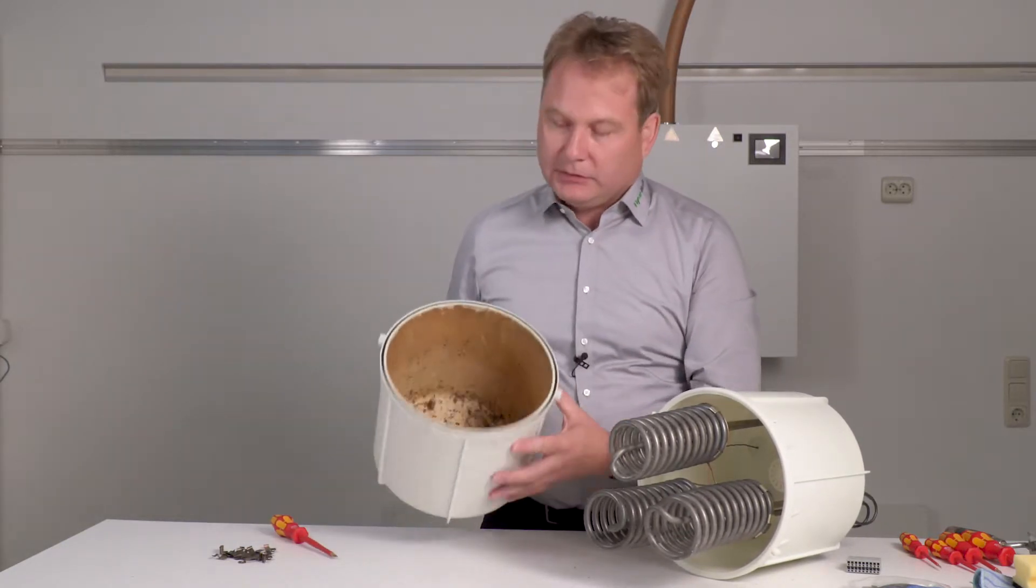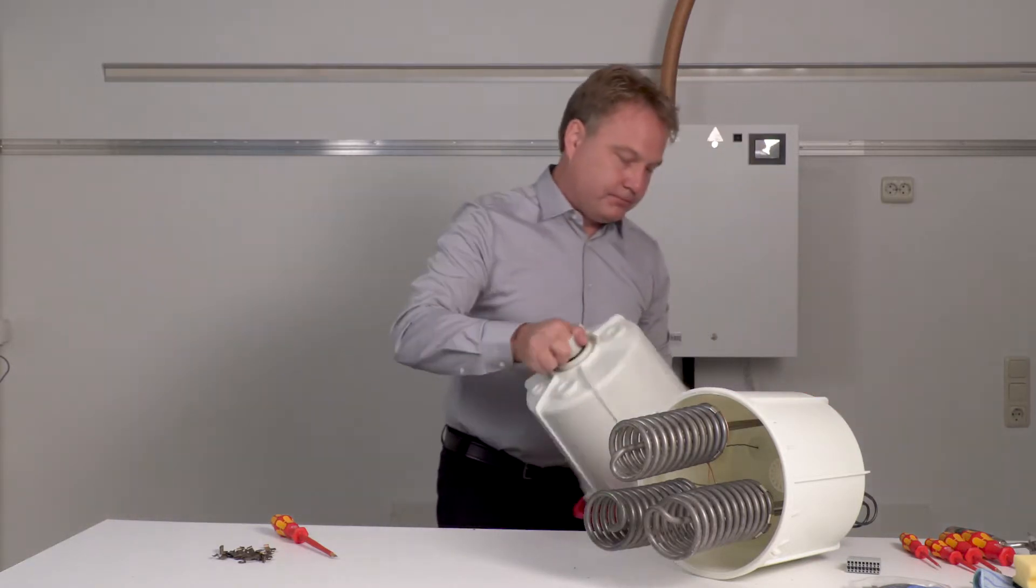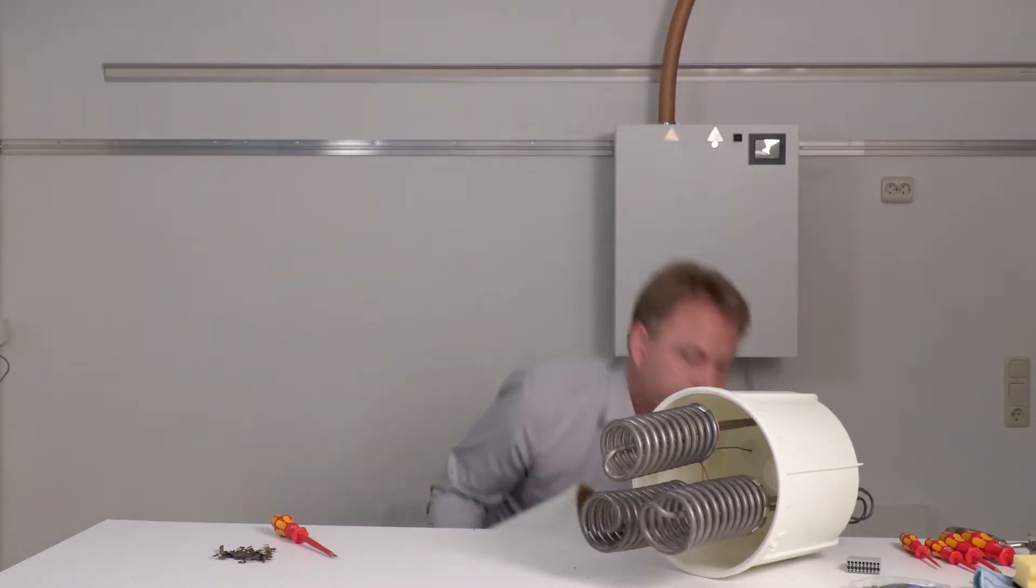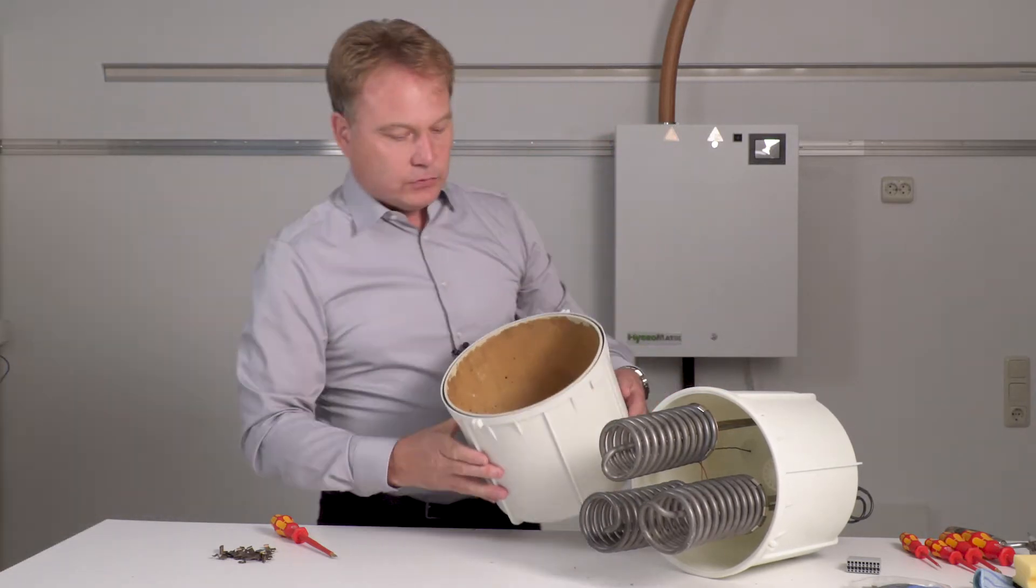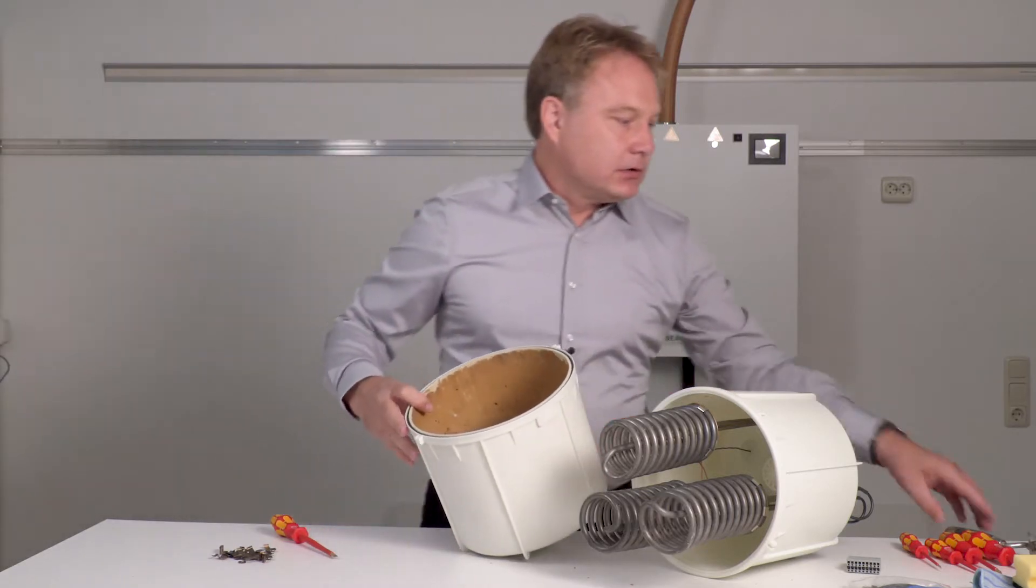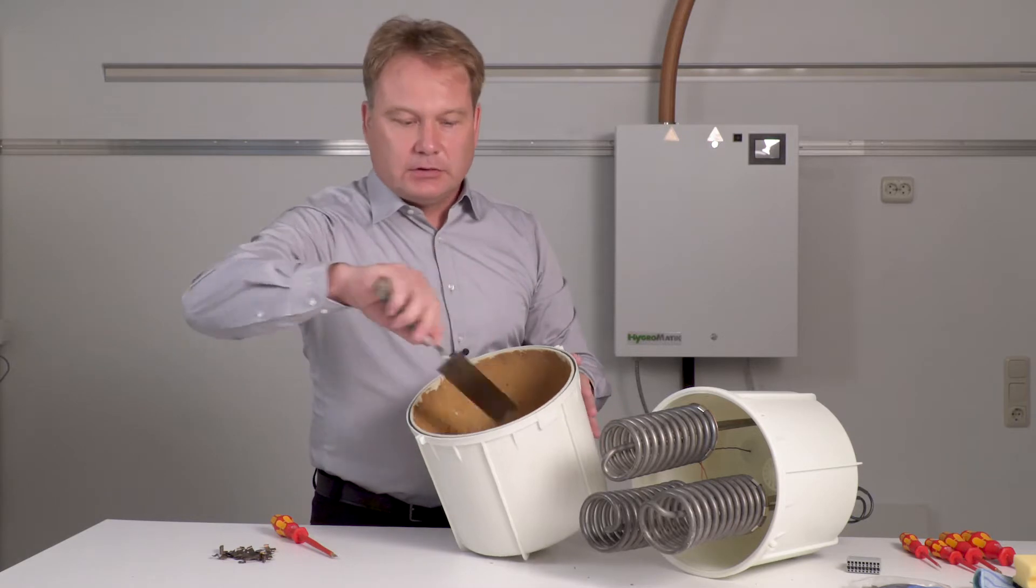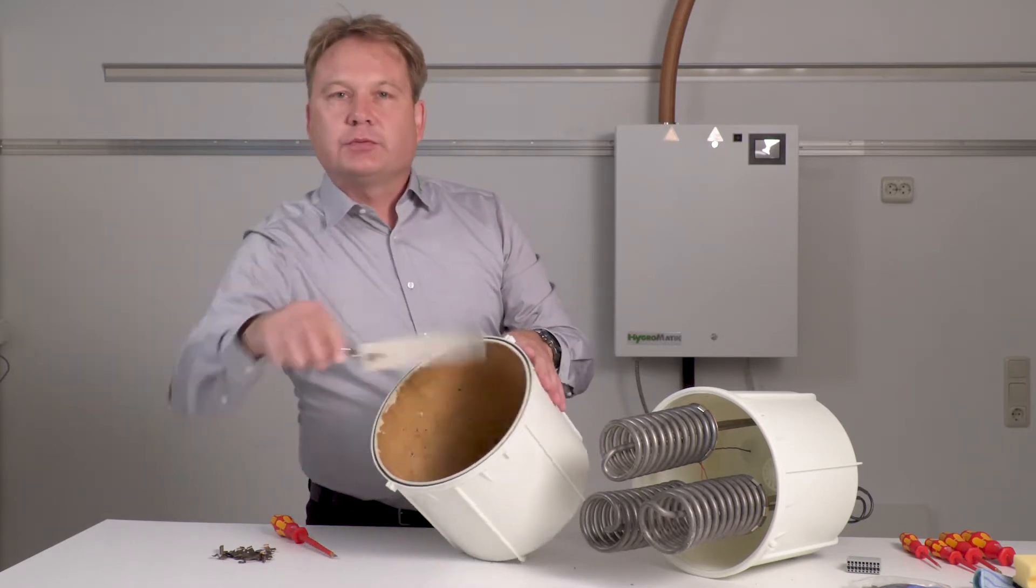You can already see the mineral buildup here. That can now be discarded. I'll empty it out. To remove the coarse particles from the cylinder wall, you can use a standard scraper or spatula and remove the coarse particles.